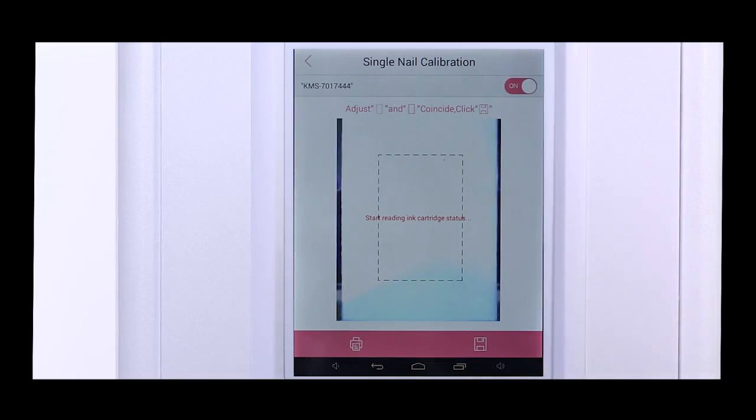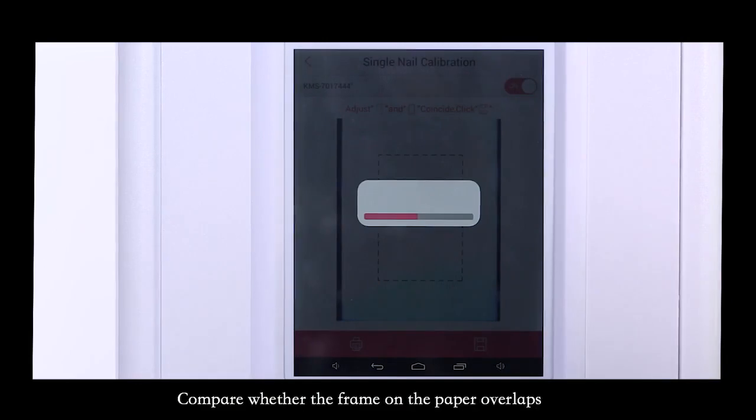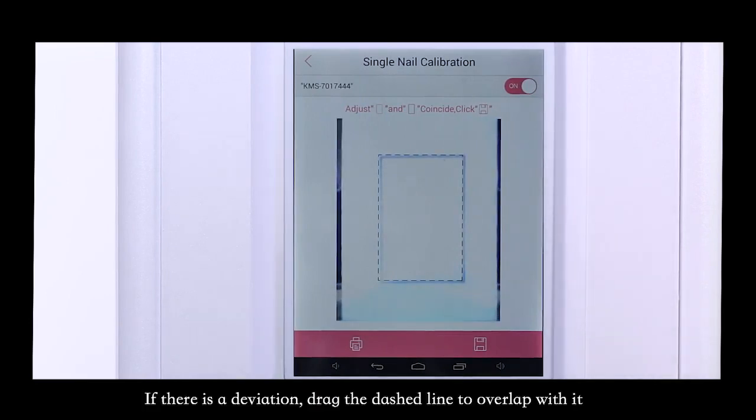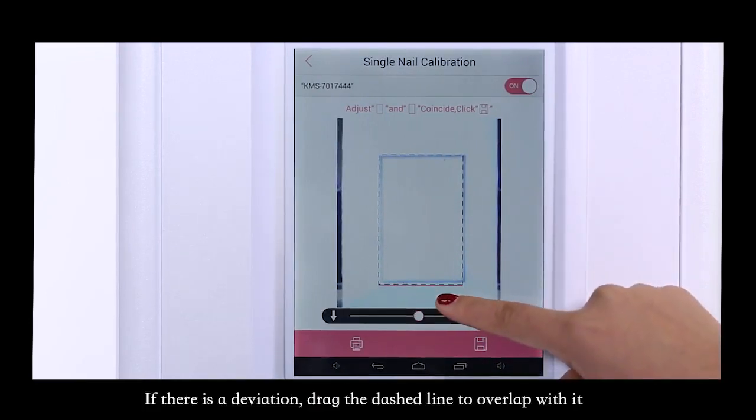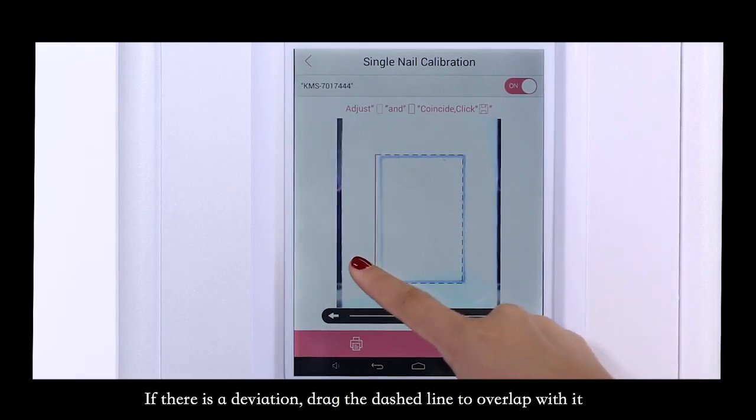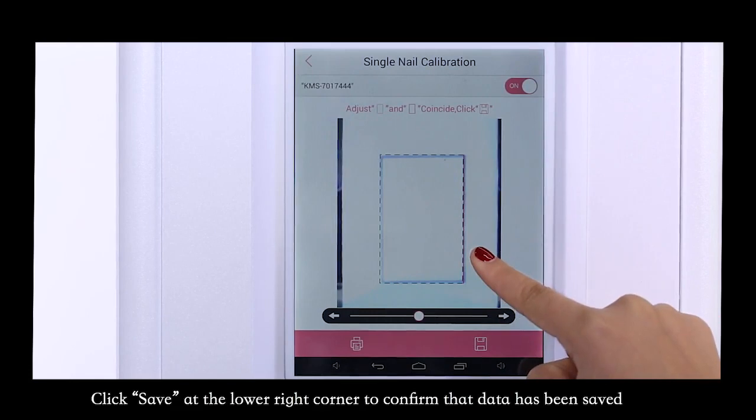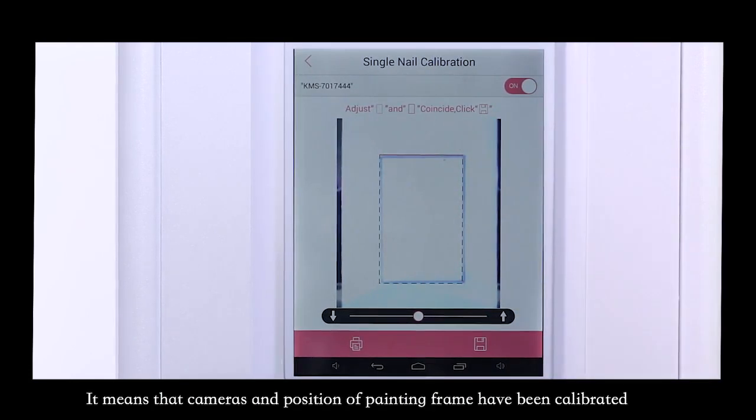After printing, compare whether the frame on the paper overlaps with the position of the dashed box. If there is a deviation, drag the dashed line to overlap with it. Click Save at the lower right corner to confirm that data has been saved. This means that the camera and position of the painting frame have been calibrated.